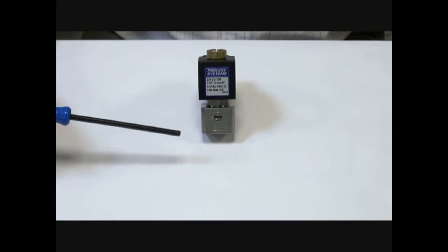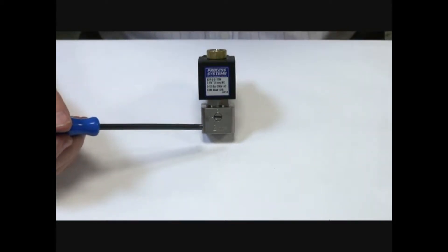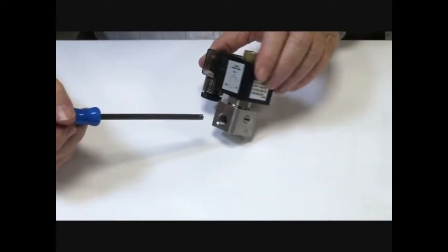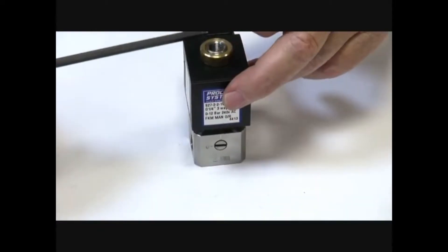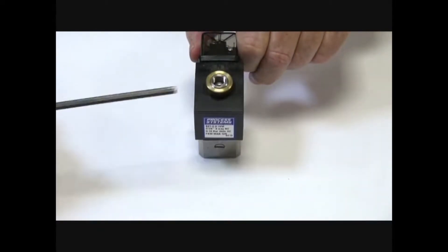It's got a 304 stainless steel body, quarter inch BSP, 2mm orifice. Supply goes into port one, out port two, exhaust through port three.